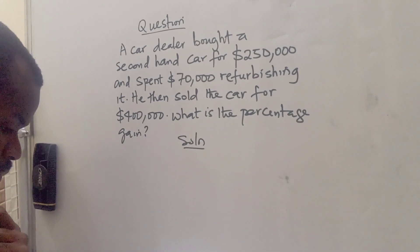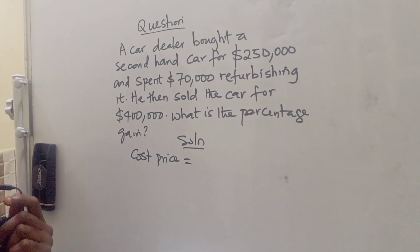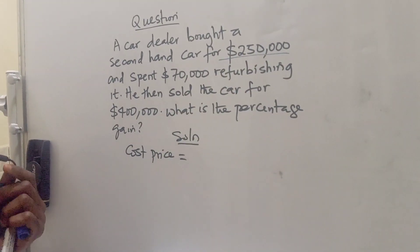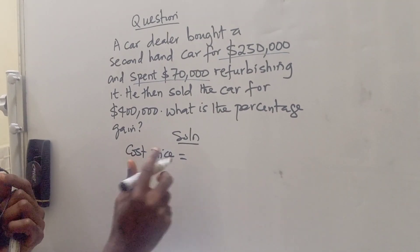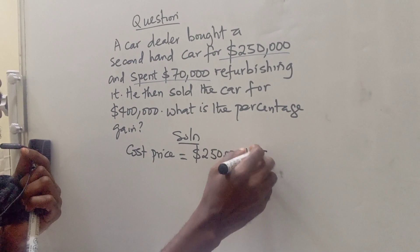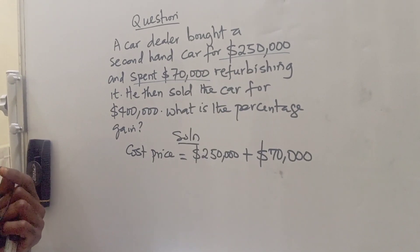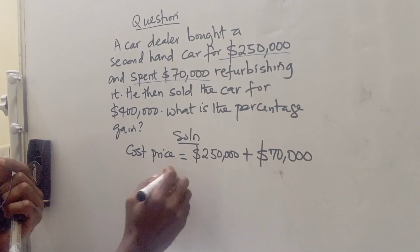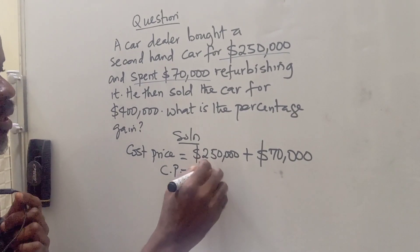First of all, we want to find the total cost price of the car. From the question, he bought the car for $250,000 and he spent $70,000 on refurbishing. So the total cost price is $250,000 plus $70,000, which gives us a total cost price of $320,000.